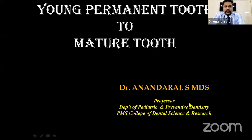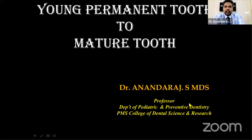The topic of today is the young permanent tooth and its management through to the mature tooth. A young permanent tooth is one which has been newly erupted into the oral cavity, where both the root and crown are not fully formed — the enamel rods are not completely developed, and the root is incomplete. Today's session deals more with the management of the apical part of the permanent tooth.